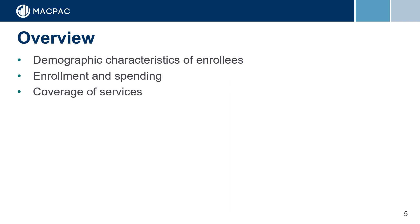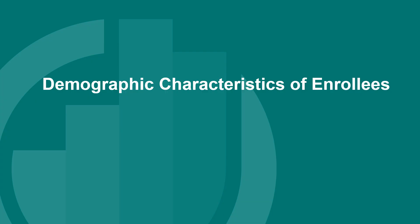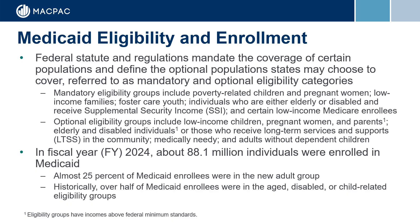First, let's discuss who Medicaid covers and their characteristics. Federal statute and regulations mandate that states cover certain low-income populations in their Medicaid program, and they define the optional populations that states may choose to cover. These groups are known as mandatory and optional eligibility groups. Among the mandatory eligibility groups, states are required to cover low-income related children and pregnant women, low-income families, foster care youth, individuals who are either elderly or disabled, and certain low-income Medicare enrollees.